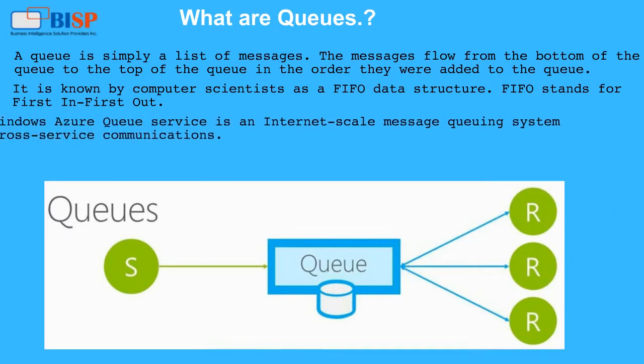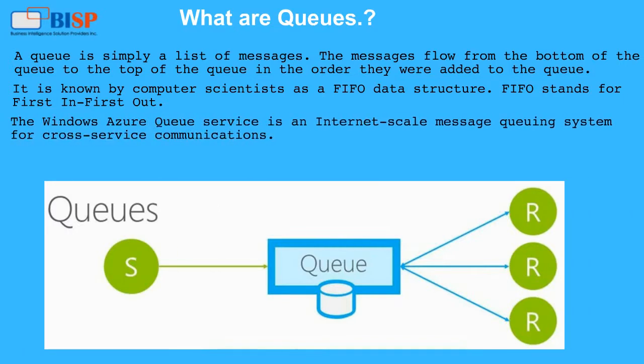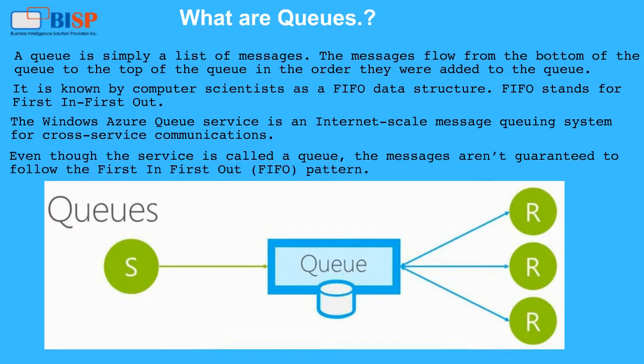The Windows Azure Queue Service is an Internet-scale message queuing system for cross-service communications. Even though the service is called a queue, the messages are not guaranteed to follow the First In, First Out FIFO pattern.